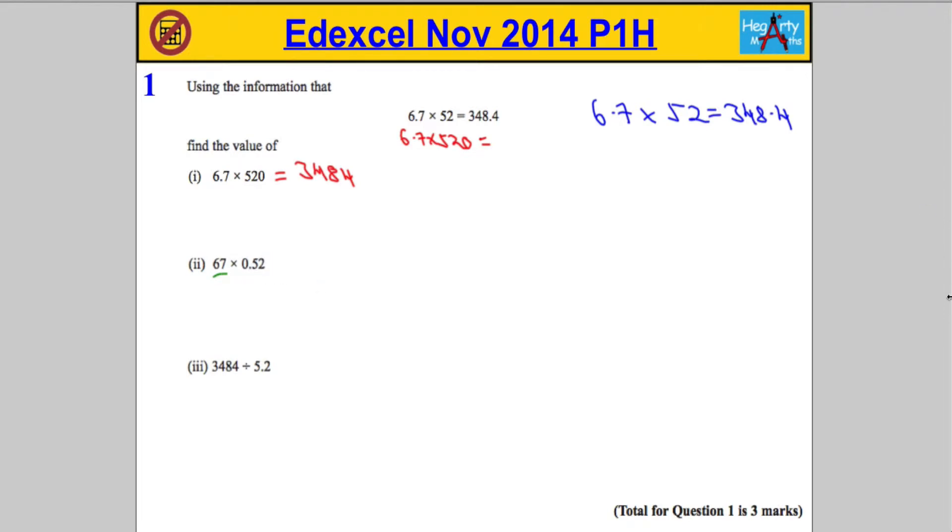So similar to before, if we just do 67 times 52, we should get an answer that's 10 times bigger than what we have, and that's because 67 is 10 times bigger than 6.7. So we should get 3484.